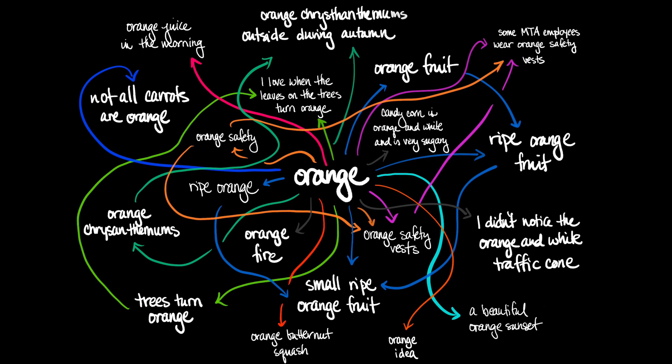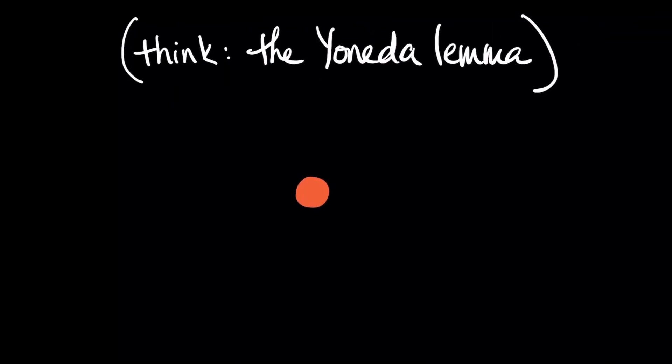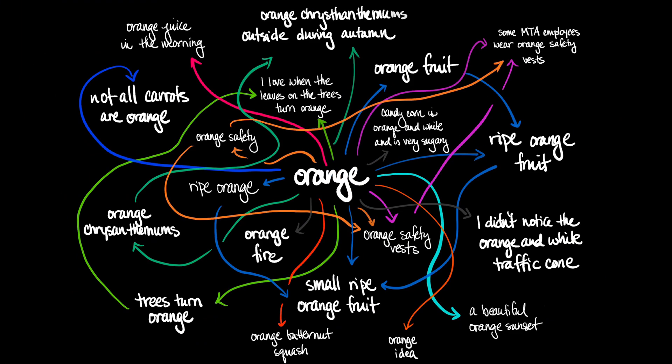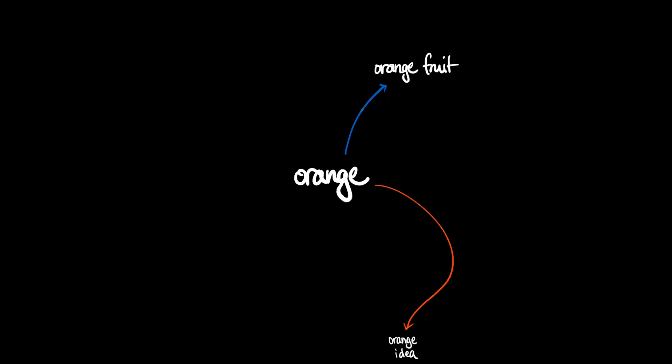This is not unlike the Yoneda Lemma in category theory, which says that any mathematical object is completely determined by the network of relationships that object has with other objects in its environment. And this is the same perspective we take here. And this is like the algebra part of the story. But it's not the whole story. There's also statistics. In other words, it's not enough to know that orange can go with fruit or chrysanthemum or safety vest. But there's additional information, namely the statistics of these expressions. Again, the probability for saying I have an orange idea is much smaller than that for orange fruit. So, what you'd like to do is to decorate this network with something like conditional probabilities.